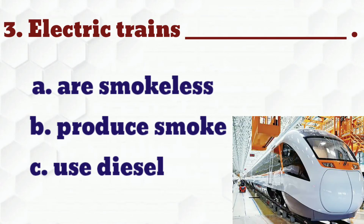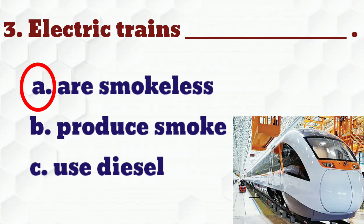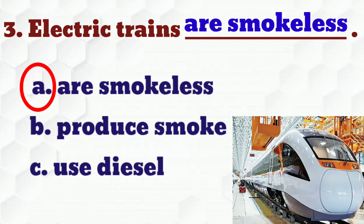Students, see the last question: 'Electric trains blank.' The options are A. Smokeless, B. Produce smoke, C. Use diesel. Which is the correct answer? Yes, A. Smokeless. So we have to write A. Smokeless.